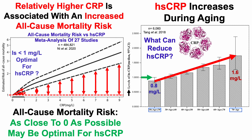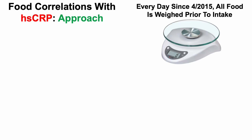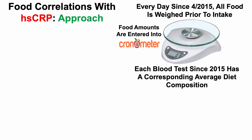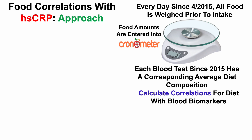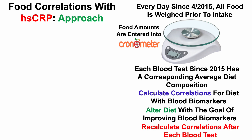With these data in mind, what can reduce HSCRP? First, let's look at which foods are significantly correlated with lower levels of HSCRP. The approach: every day since April of 2015, I've weighed all of my food prior to intake using a food scale, then entered that data into Cronometer. Because each blood test since 2015 has a corresponding average diet composition, I can calculate correlations for diet — including macro and micronutrients and individual foods — with blood biomarkers. I then alter my diet to improve the biomarkers, recalculate correlations after each blood test, and repeat — increasing certain foods, decreasing certain foods based on how the correlations look.